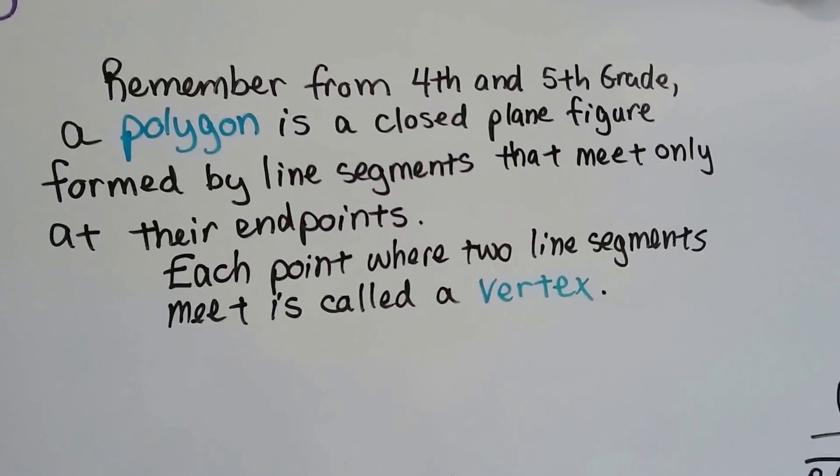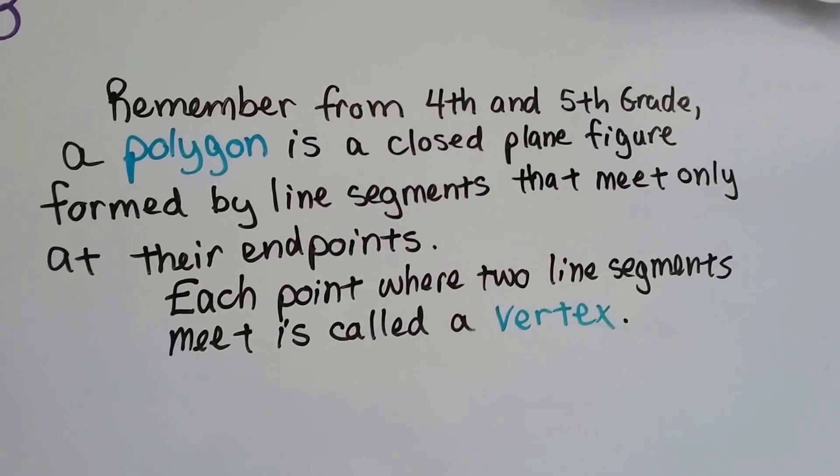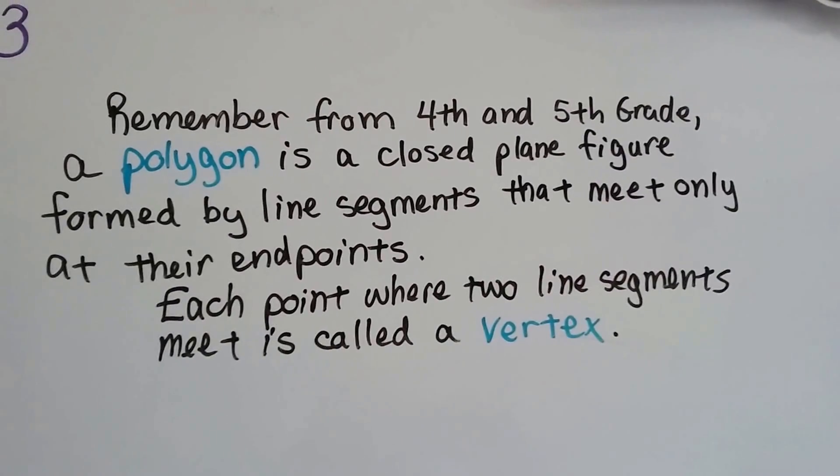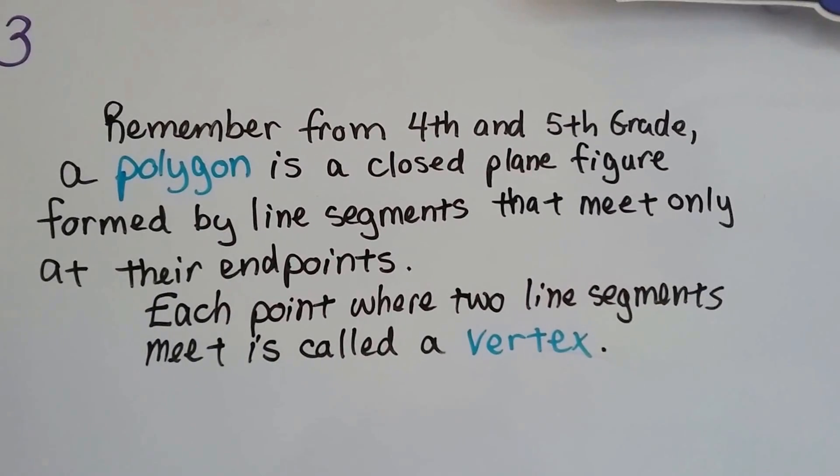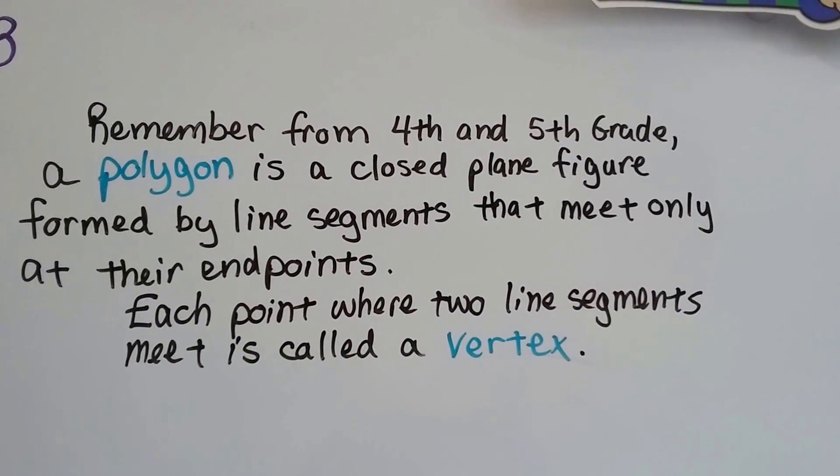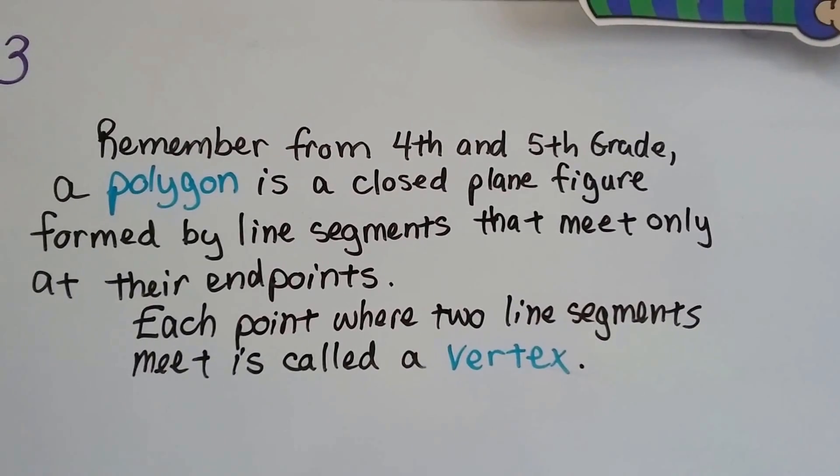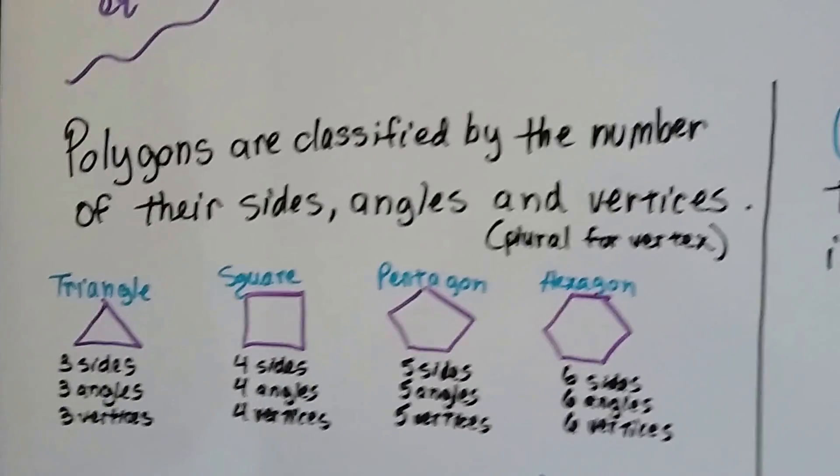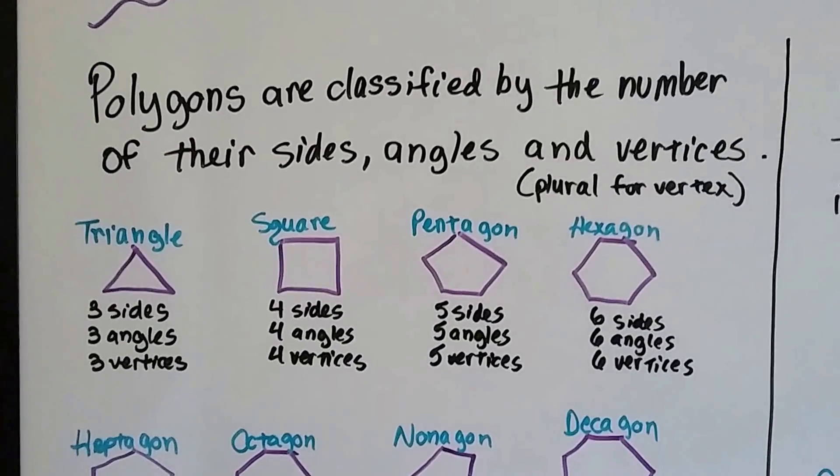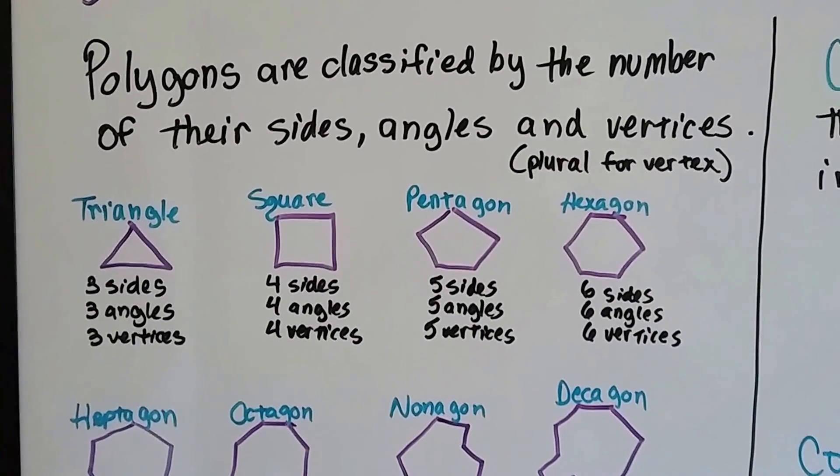Remember from 4th and 5th grade, a polygon is a closed plane figure formed by line segments that meet only at their endpoints, and each point where the two line segments meet is called a vertex. I hope you remember. Polygons are classified by the number of their sides, angles, and vertices. That's plural for vertex.